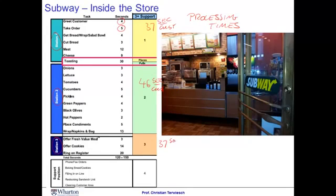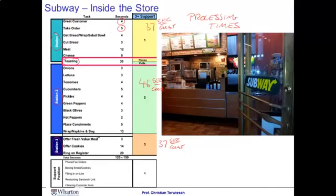Throughout this course, I will use the words activity time and processing time interchangeably — they are one and the same thing. I want to do a little hand-waving around the toasting activity, keeping in mind that toasting doesn't require direct hands-on work by a worker but is instead automated through a toaster. If there were a limited amount of toasting capacity, that would be something to consider, but for now I'll be hand-waving over this matter.